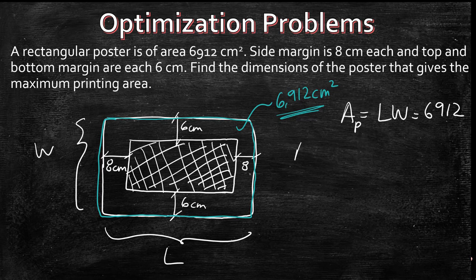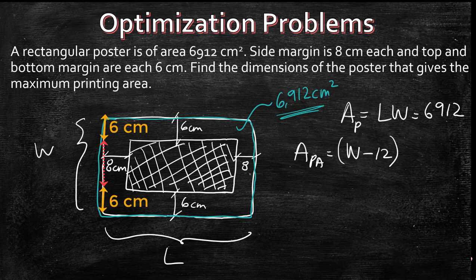So we know the area of the poster AP and then we have the area of the printing, we're going to call it printing area PA, is equal to length times width minus the margins. So if we're looking at W now the new W is going to be W minus 12. Do you see that because we have 6 and 6?